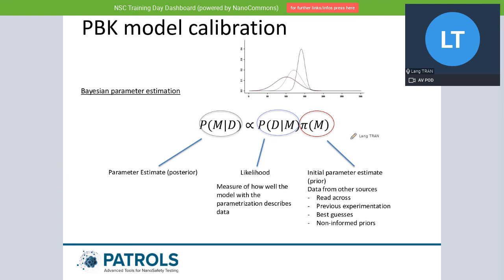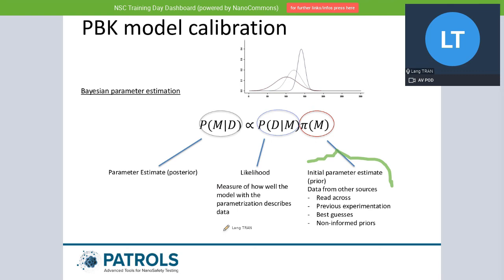The Bayesian parameter estimation starts with an initial parameter estimate — from previous experiments or a best guess. You then modify that initial one by the likelihood function. The likelihood is a measure of how well the model with that parameterization describes the data, and then you come out with a better estimate of the parameter. The prior is multiplied by the likelihood to give a posterior estimation. This is an iterative process that eventually converges, and that is the final parameter set.